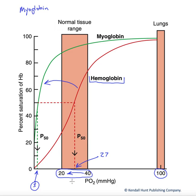The fact that myoglobin is 50% saturated at a PO2 of 3 indicates that it has very high affinity for binding oxygen. You might look at the curve for myoglobin and say that in the tissues, the myoglobin is simply going to remain attached to the oxygen — it's really not going to deliver it or hand it off within the cell.